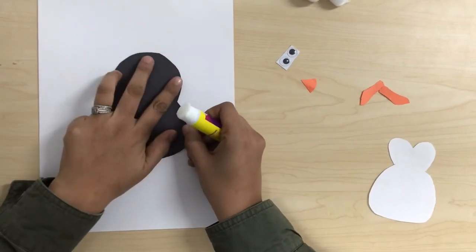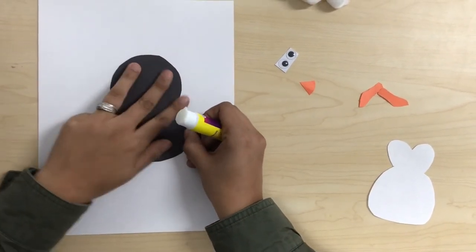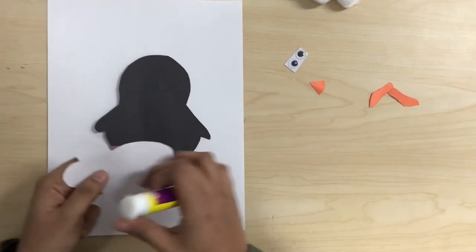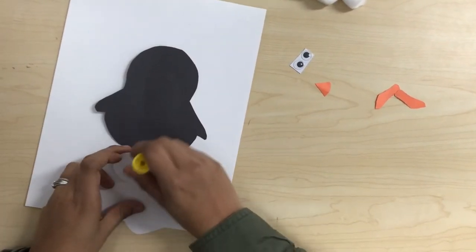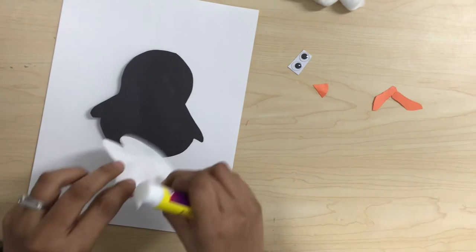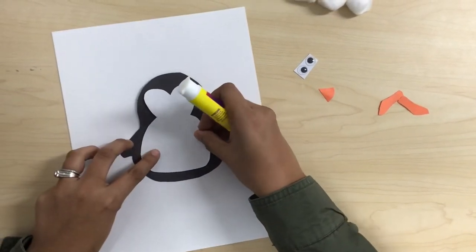Then we're going to get the white body penguin cut out and we're going to put it on the top of the black construction paper.